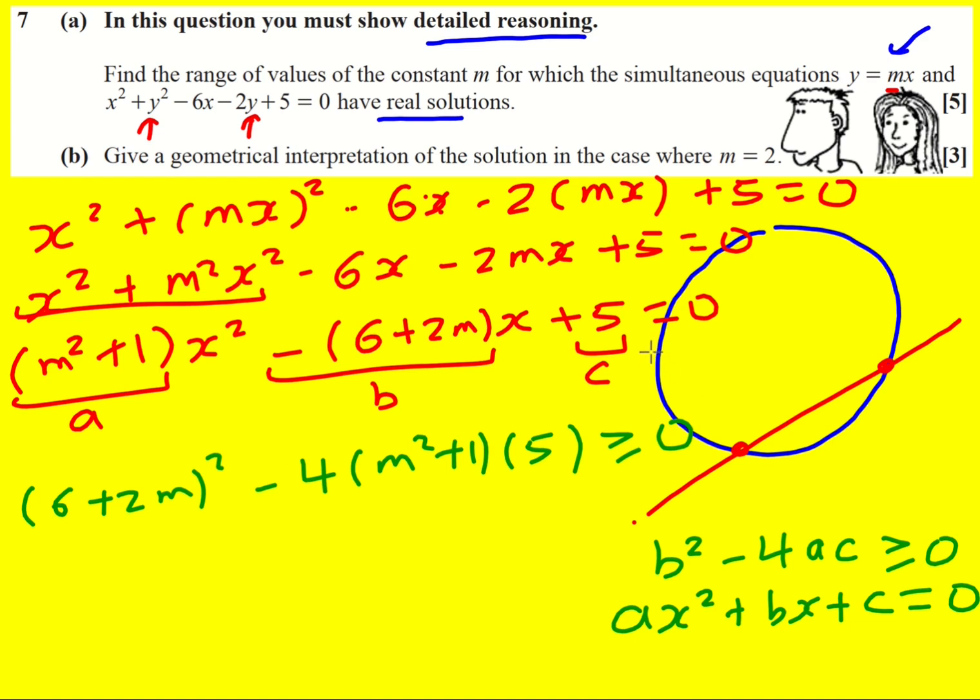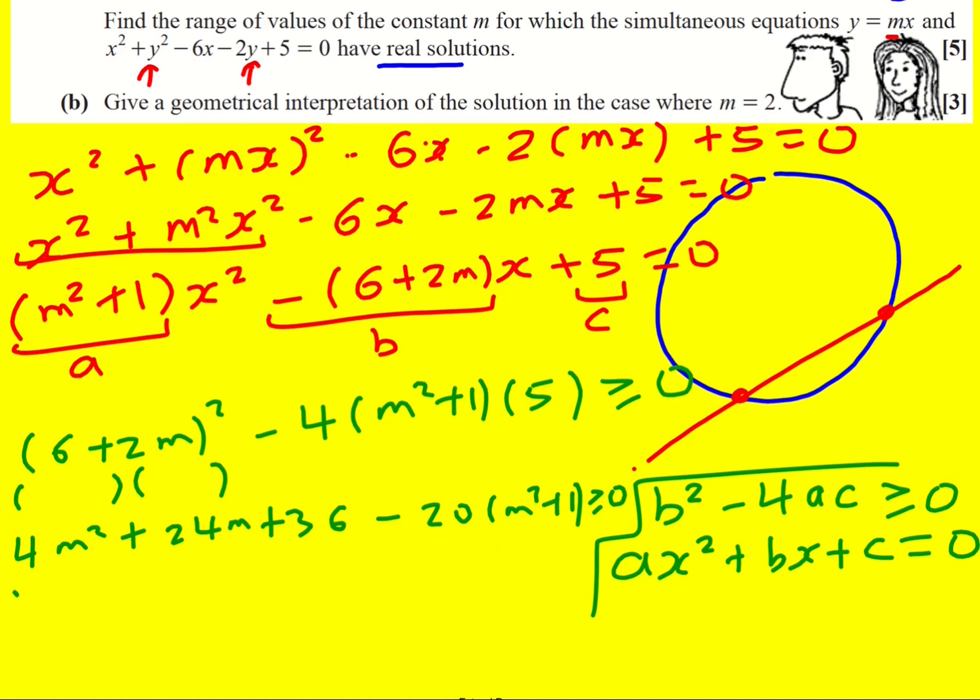Okay now expand this double bracket. It's 6 plus 2m times 6 plus 2m. I'm timesing it by itself so I'm going to get 4m squared. I'm going to get 2m times 6 gives 12 and then another one of them, so 24m plus 36. And then minus 20m squared plus 1, which is minus 20m squared minus 20, greater or equal to 0.